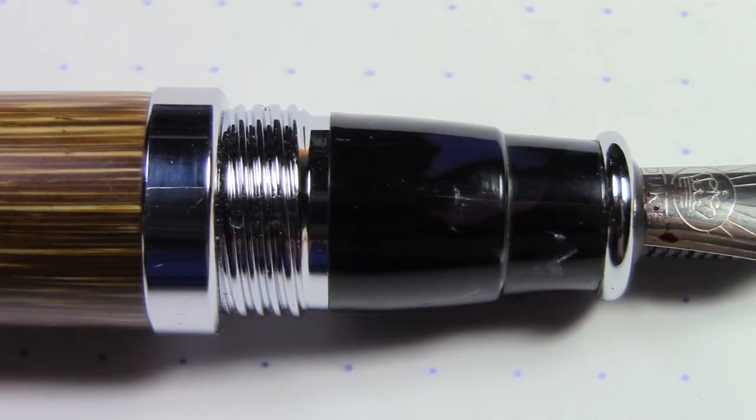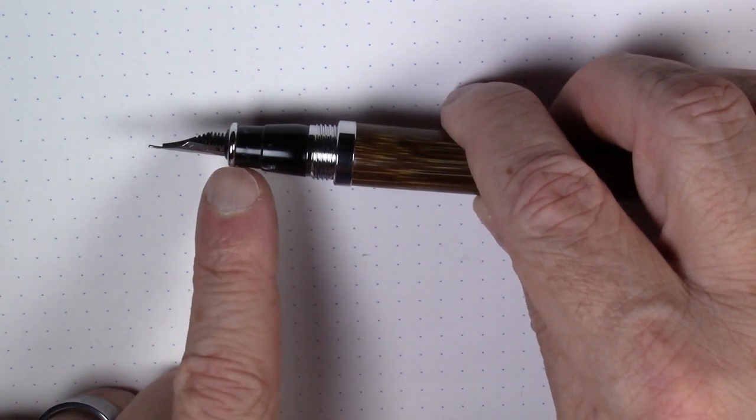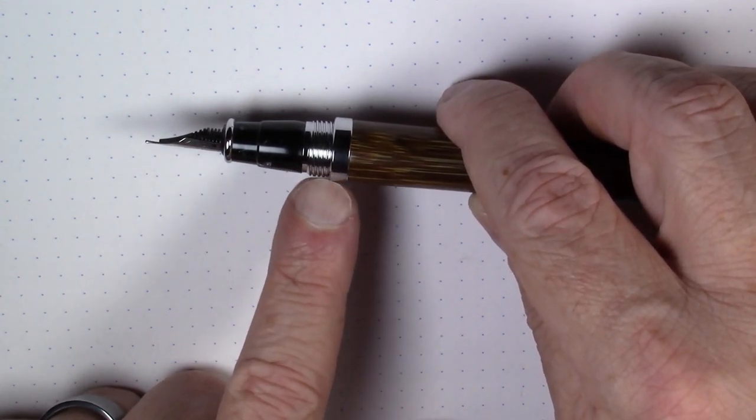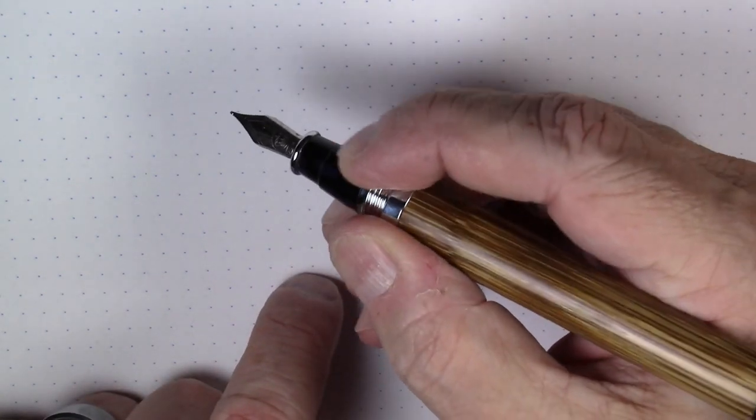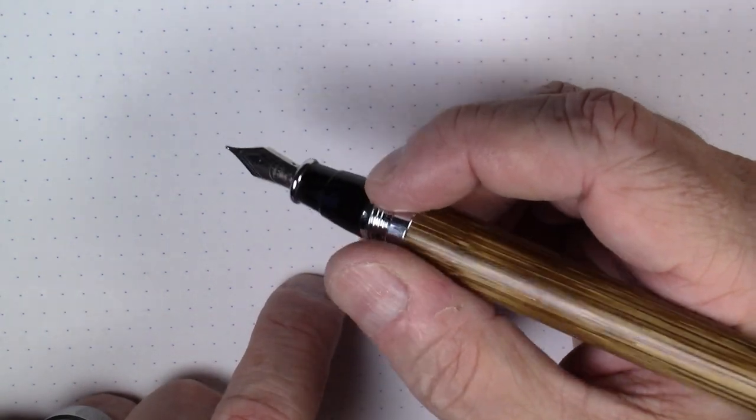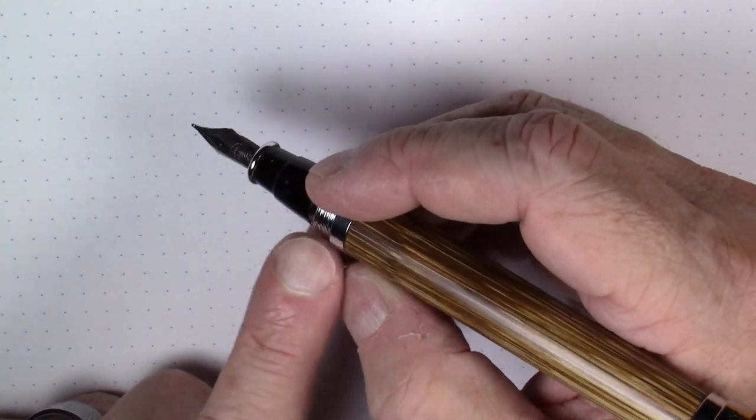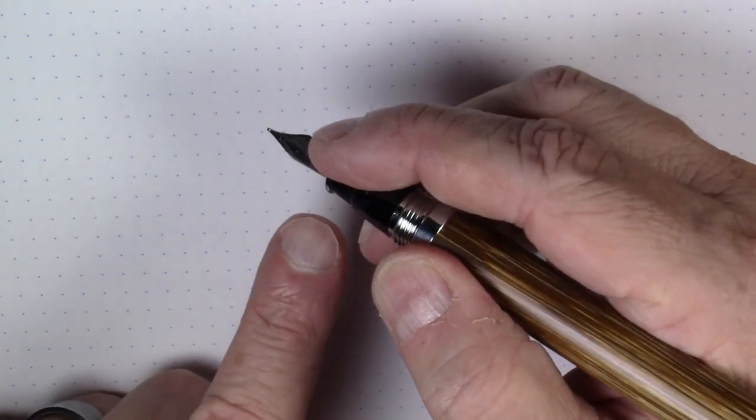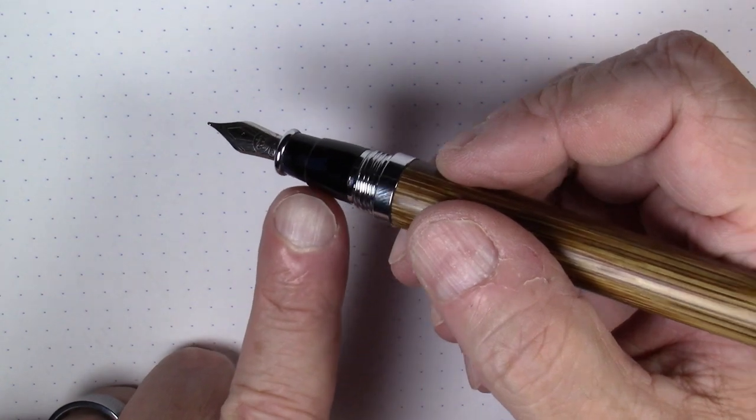The section is really kind of odd, kind of a strange section. It's got a double step down going on here with this little chrome ring, big step down, and a bunch of threads. The threads are very smooth, so they're not obtrusive at all. This step down is not insignificant, so if step downs bother you, you may have a problem there. The section is very small for a pen this size, quite a tiny section.